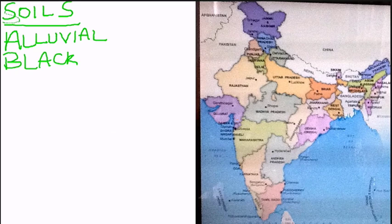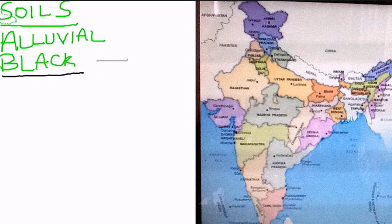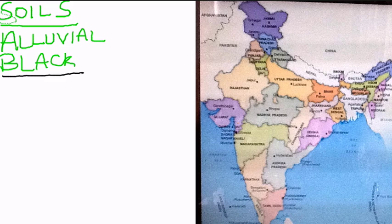The next soil is the black soil, also called regur or cotton soil. Its color ranges from gray to dark brown or black. This soil is highly clayey in content, which gives it a good capacity to retain moisture. It also develops cracks during summer, making it very difficult to work during the monsoon season. This soil is rich in iron,